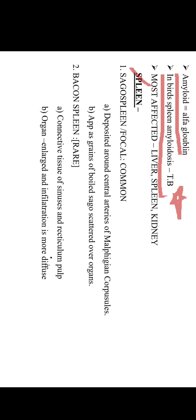In the spleen, we have two conditions: sago spleen and bacon spleen. Sago spleen is also known as focal, which is very common, with deposits around the central arteries of Malpighian corpuscles — they appear as grains of boiled sago. Bacon spleen is rare and diffuse; here deposits are seen around the connective tissue of sinuses and reticular pulp. In sago spleen the infiltration is focal, whereas in bacon spleen the infiltration is more diffuse and the organ appears enlarged.